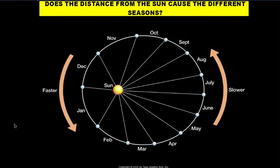In the past when I've asked my students what they thought caused the seasons, the most popular answer was that during the summertime we were closer to the Sun because it was warmer, so it would make sense that we were closer, and during the wintertime we were further away getting less sunlight and thus being cooler.